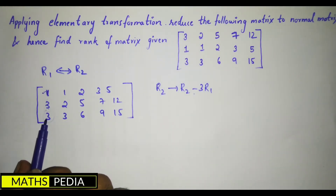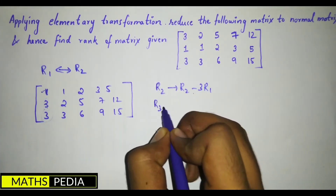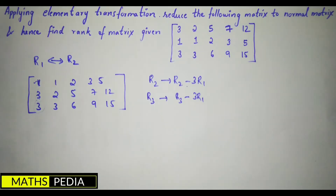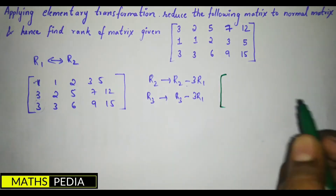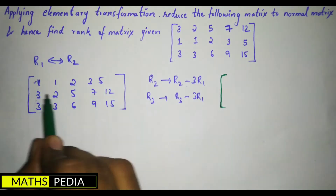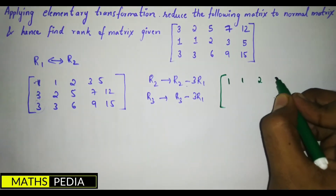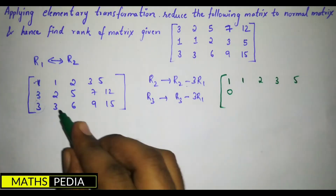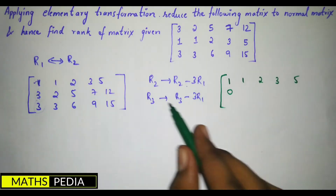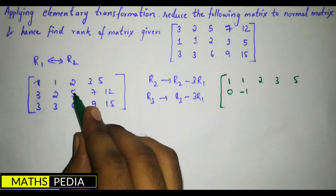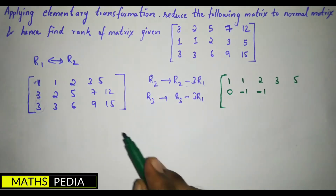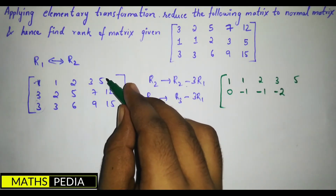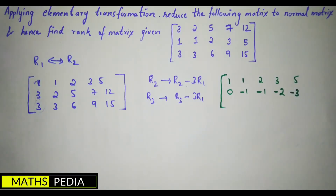We also apply R3 = R3 − 3R1. After doing these two operations, the first row remains the same: 1, 1, 2, 3, 5. For R2: 3−3=0; 2−3=−1; 5−6=−1; 7−9=−2; 12−15=−3. For R3: 3−3=0; 6−6=0; 9−9=0; 15−15=0.